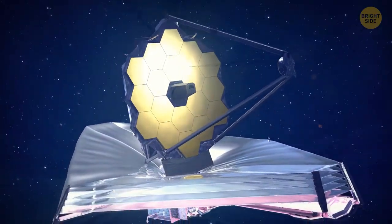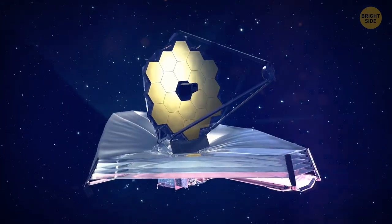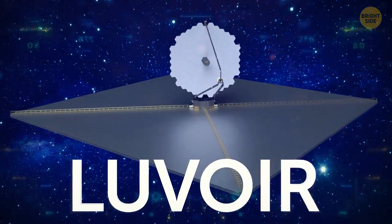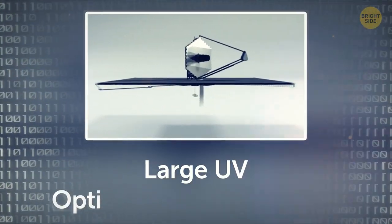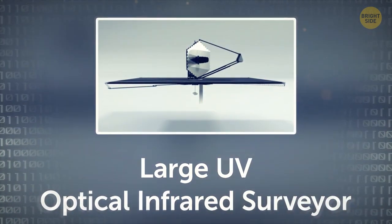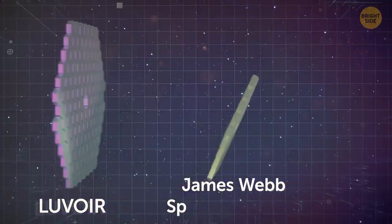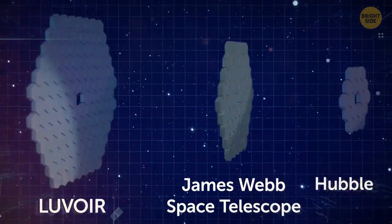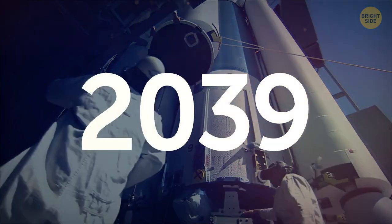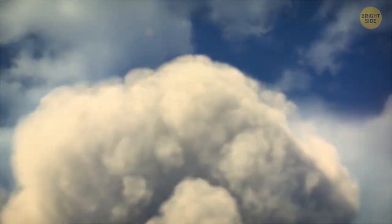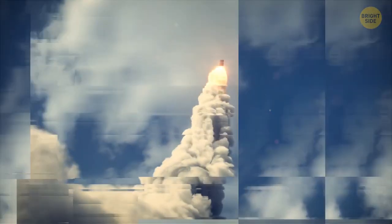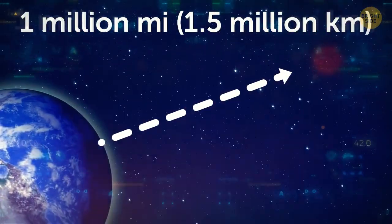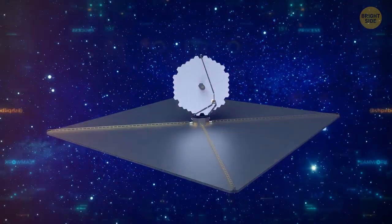This telescope is scheduled to operate for about six years. But, in the future, we'll launch an even bigger one. It's called LUVOIR, which stands for the Large UV Optical Infrared Surveyor. Its mirror will be twice the size of that of the James Webb Space Telescope, and almost seven times the size of the Hubble's. The telescope is scheduled to be launched in 2039. We'll get it into orbit with the help of a super-heavy rocket. Then, we'll have to deliver the telescope to its destination, one million miles away from Earth. And then, it'll begin its observations.